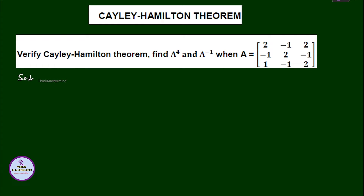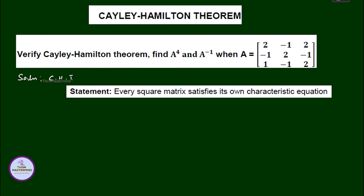Solution. The statement of the Cayley-Hamilton theorem is: every square matrix satisfies its own characteristic equation. So, given the matrix is a square matrix of order 3 by 3, the characteristic equation is lambda cubed minus S1 times lambda squared plus S2 times lambda minus S3 equals 0.